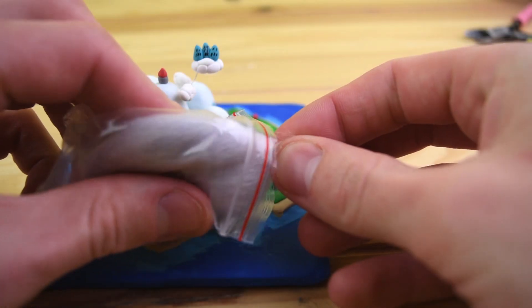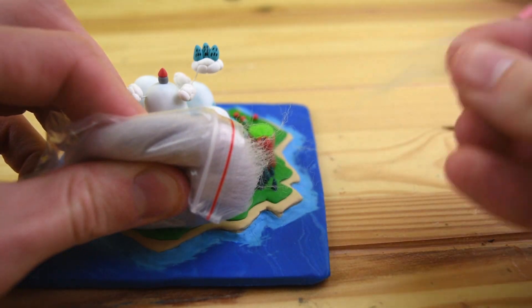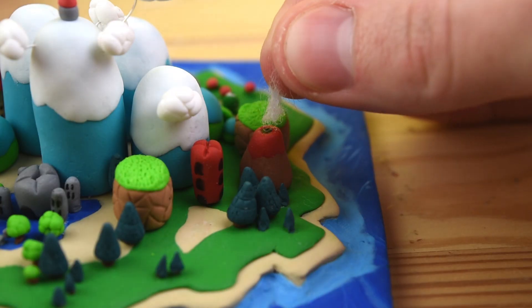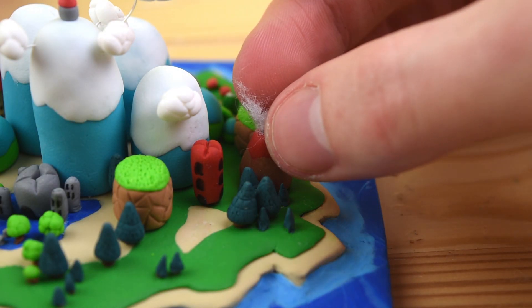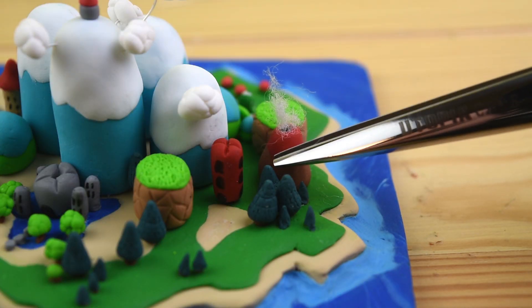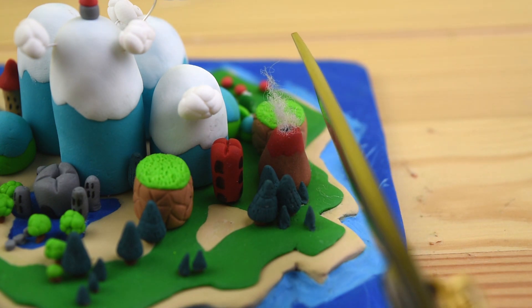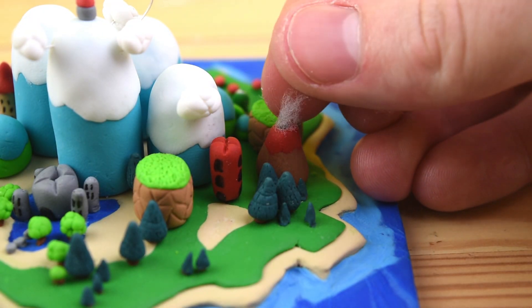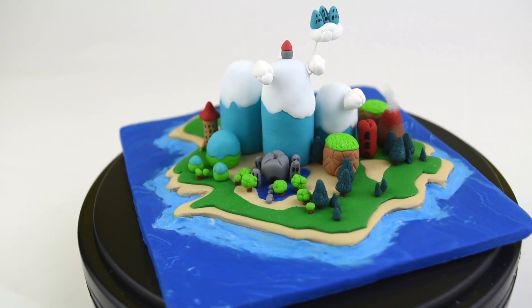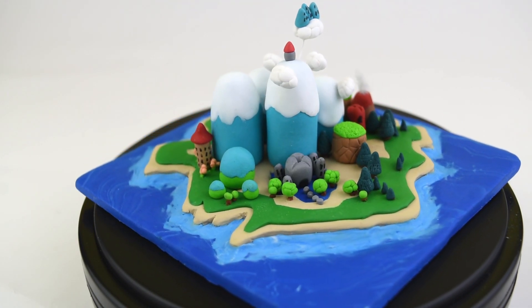And for our final detail, we are going to take some gray wool, and this is going to be for the smoke on top of the volcano. But it's a little bit messy, so let's give our volcano a bit of a haircut. And finally, here it is, Yoshi's Island from Super Mario World 2.